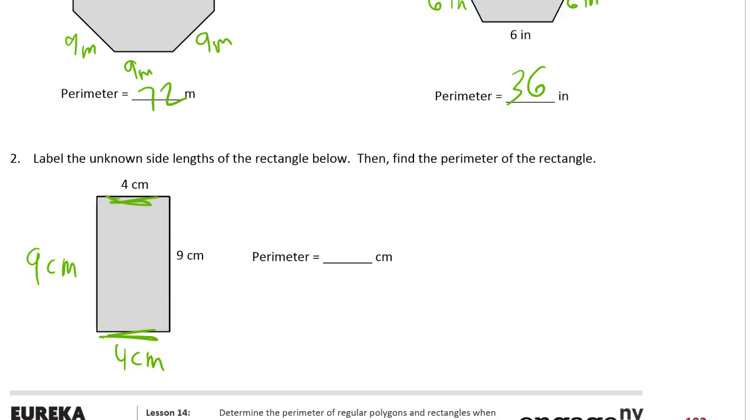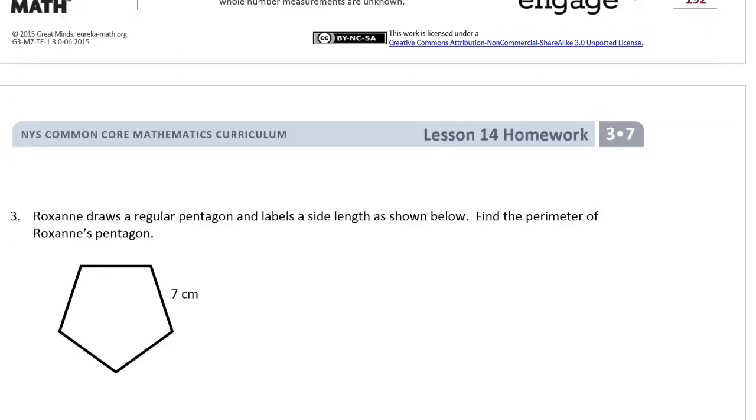So we have 9 plus 4 is 13 and so we have two 13s to add together. Mentally that's 26. So we could write all that down. 26 centimeters.